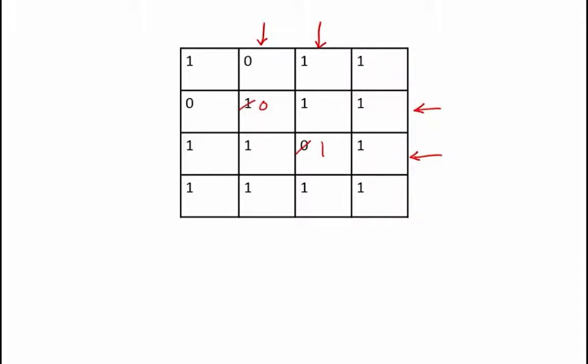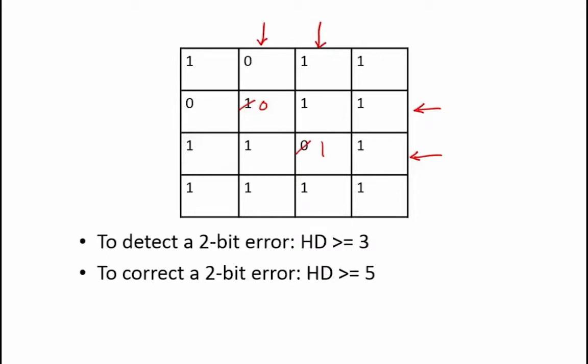Going back to our original claims about Hamming distances, this is in line with our expectations. If e equals 2, meaning that we want to detect a 2-bit error, then the Hamming distance must be greater than or equal to e plus 1, which equals 3. To correct a 2-bit error, the Hamming distance must be greater than or equal to 2e plus 1, which equals 5. Since our Hamming distance in this problem is 4, we can only detect 2-bit errors, but not correct them.